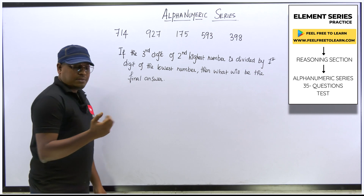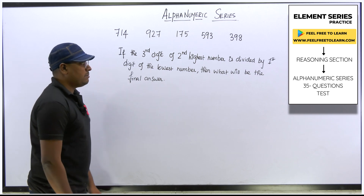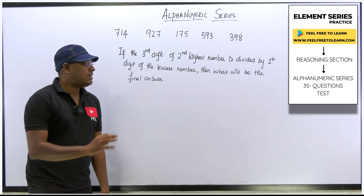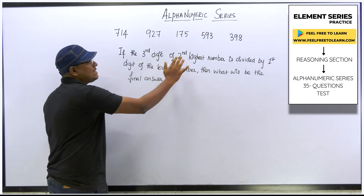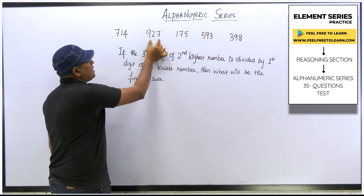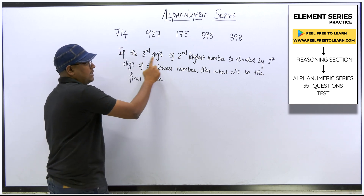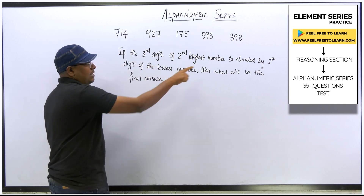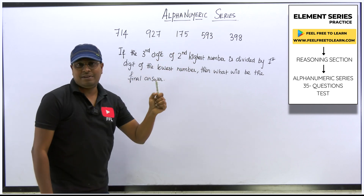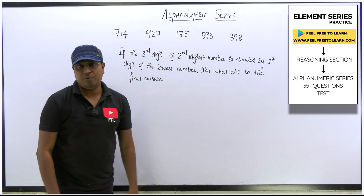Here is the last question: if the third digit of the second highest number is divided by the first digit of the lowest number, what will be the final answer? The first highest number is 927, so the second highest is 714. The third digit of 714 is 4. The lowest number is 175, and its first digit is 1. So 4 divided by 1 equals 4. The answer is 4.